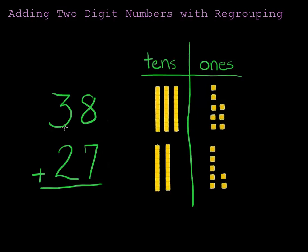Now, in 38, there are three tens and eight ones. So, here are my three tens and here are my eight ones. 27 has two tens and seven ones.